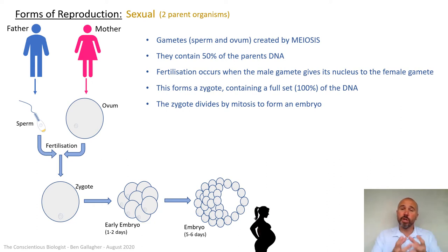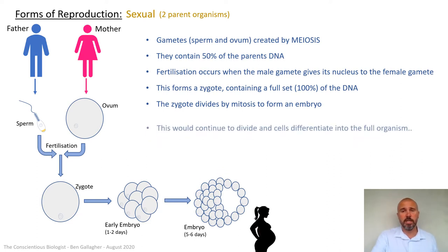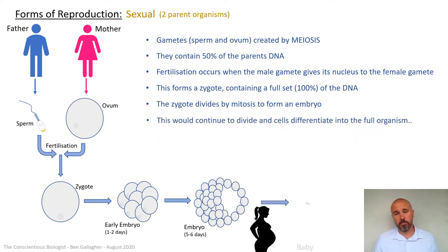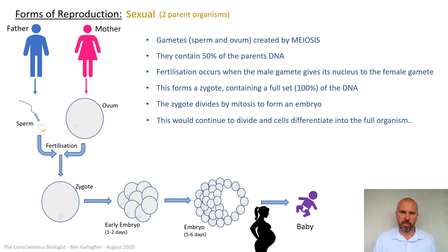That more organized embryo will start to form into a fetus. The woman, of course, is pregnant and the baby is growing inside her in the uterus. After nine months in humans, she's going to give birth to a fully formed, fully differentiated baby that's a new member of that same species.